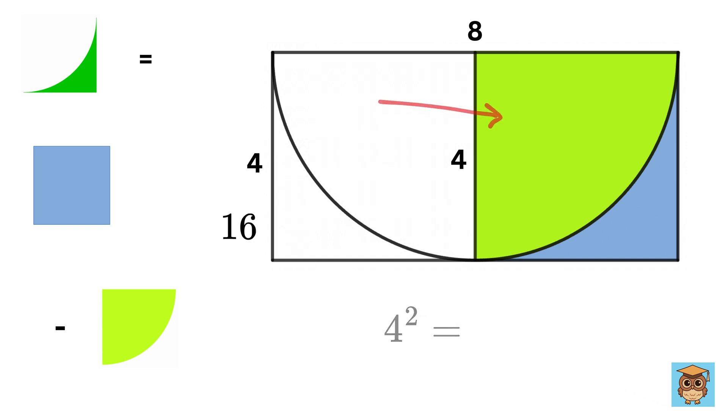And this quarter circle has radius 4, so its area will be π r squared by 4, where r is 4. So, its area will be 4π. Thus, the area of this shaded region will be 16 minus 4π.